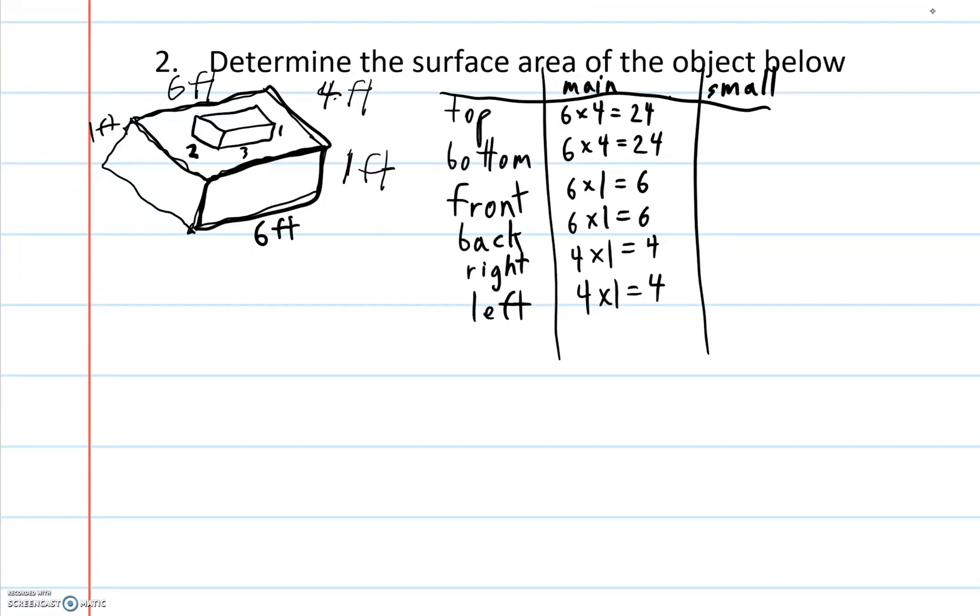Now for my small shape, I've got, for my top, 2 times 3 equals 6. For my bottom, 2 times 3 equals 6. For my front side, I have 3 times 1 equals 3. My back side is the same, 3 times 1 equals 3. For my right side, 2 times 1 equals 2. For my left side, 2 times 1 equals 2. So now those are all the different sides.